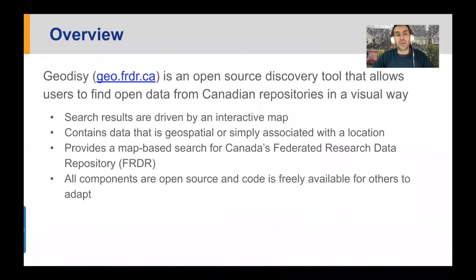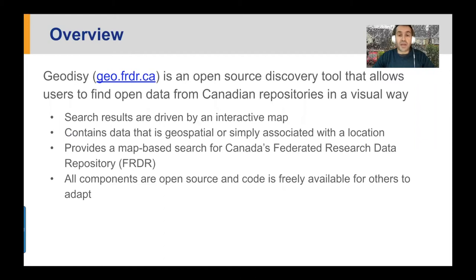Geodesy is an open source discovery tool that allows our users to find open data from multiple Canadian repositories in a visual way. The results are driven by a map, and we work with data that is geospatial in nature or simply associated with a location. Geodesy supports and provides complementary research to the Canadian Federated Research Data Repository, or FRDR. All our work has been open source and all our code is available for free for others to adapt.